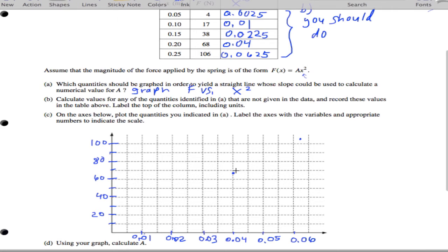Let's see. 0.0225, so 0.0225 is about at 38. We'll put that about there. And let's see, 0.01 is about 17. We'll put that just about there. And of course, then we have 4 at 0.0025. So relatively close to 0, we're going to get something about here.